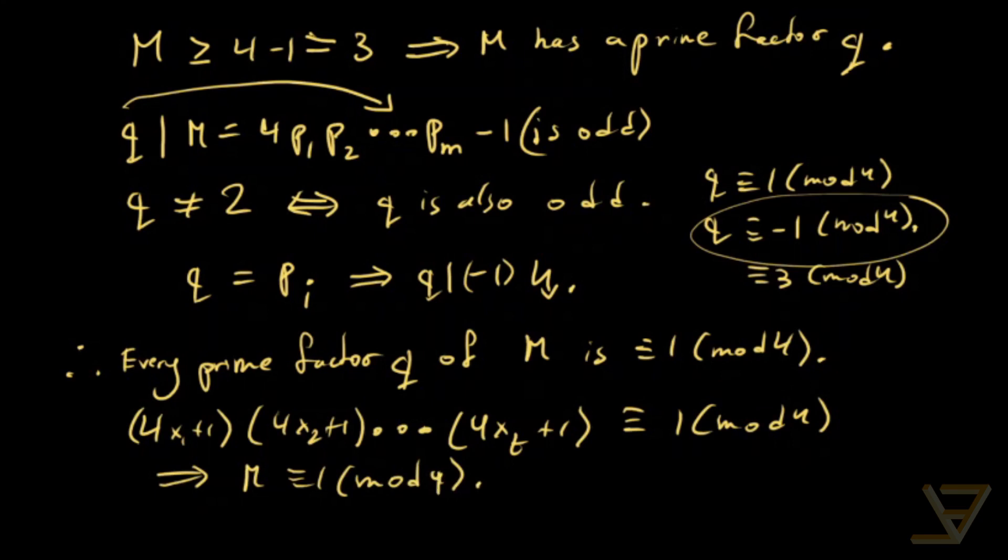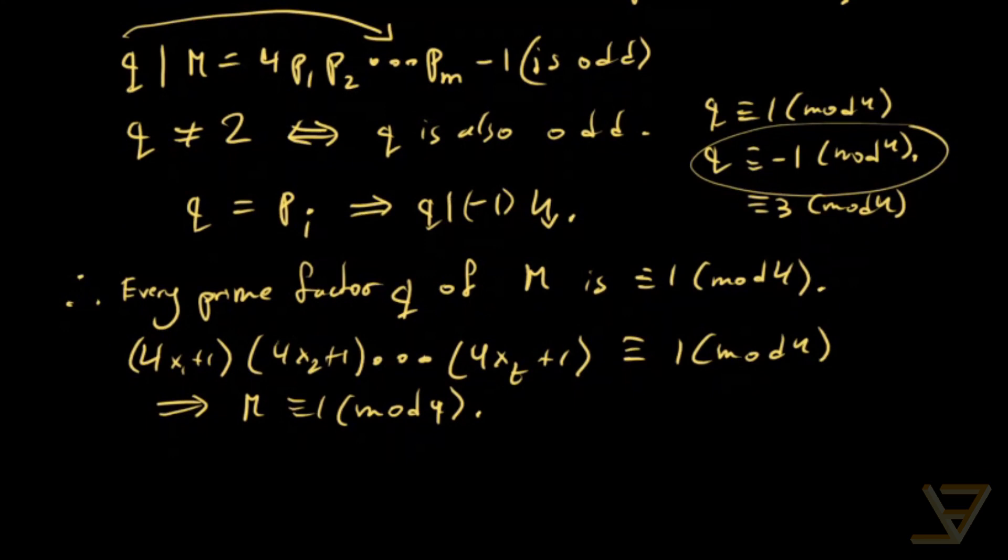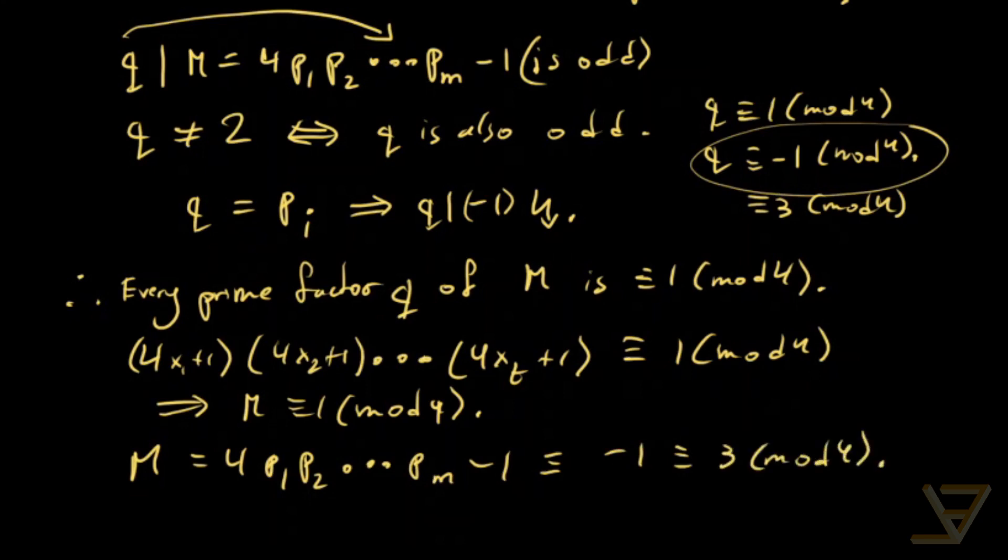But that's impossible because notice the form that M is in. M equals 4p1p2...pm minus 1, which is congruent to -1, which is congruent to 3 mod 4. And that's our contradiction.